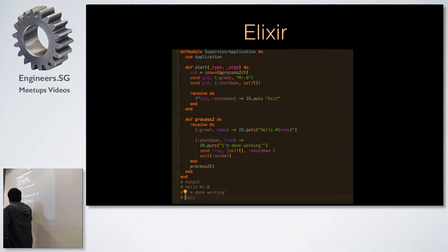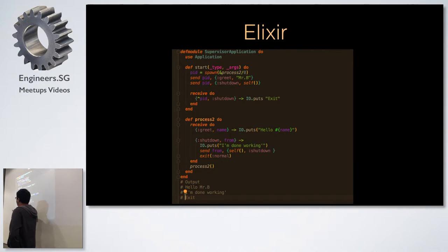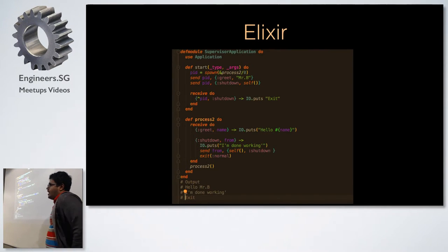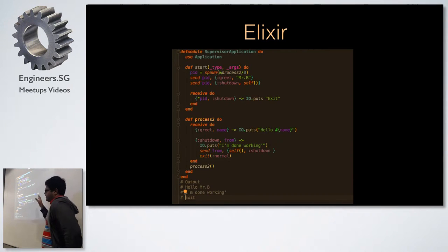After the first pattern match, the loop ends because receive only takes one message. The function is then called recursively, going into an infinite loop waiting to receive again. This doesn't cause a stack overflow because Erlang supports tail-call optimization. So it goes back to receive mode, and the second message is then received — that's how the receive-based messaging model in Erlang and Elixir works.